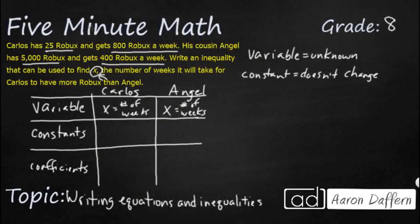Carlos has 25 Robux. Okay. And that's the amount that he starts with. It doesn't change. So we're going to put that as a constant for Carlos. He gets 800 Robux a week. So this 800 Robux a week, we're going to hold on to. That's going to be our coefficient.